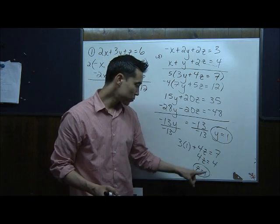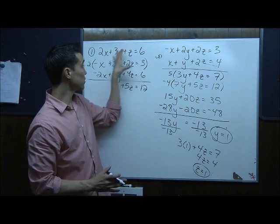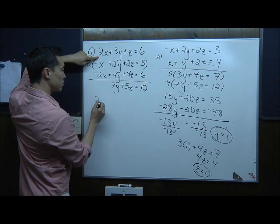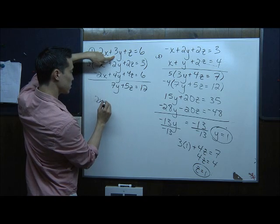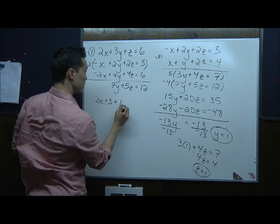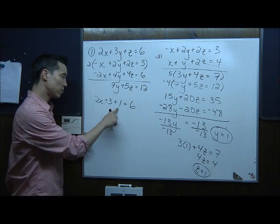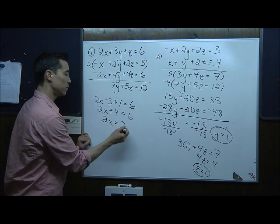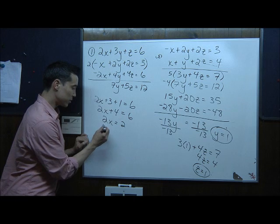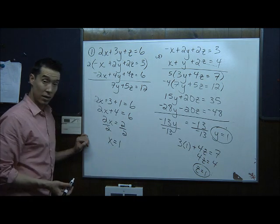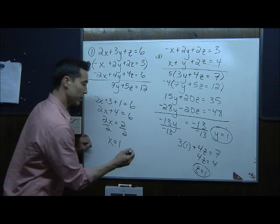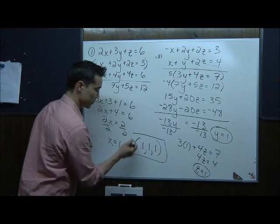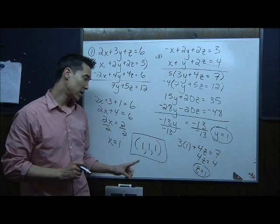I have y equals 1 and z equals 1. Now I need to find x. Going back to the first original equation: 2x plus 3 times 1 plus 1 equals 6, so 2x plus 4 equals 6. Subtracting 4, 2x equals 2. Dividing by 2, x equals 1. So the ordered triplet solution is (1, 1, 1). That is the answer for this first system of three equations and three unknowns.